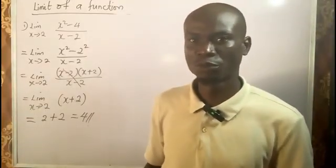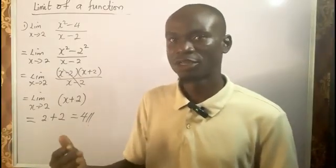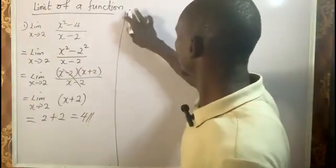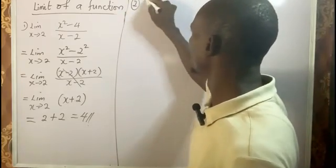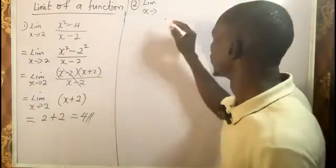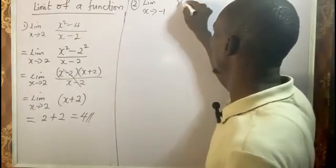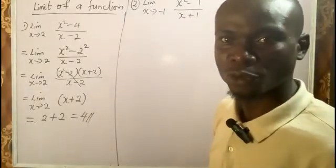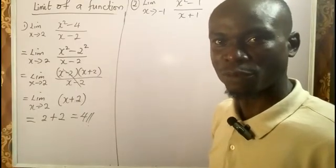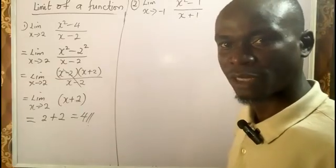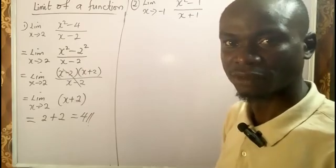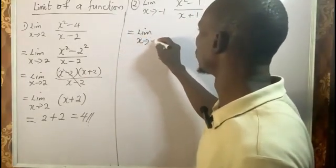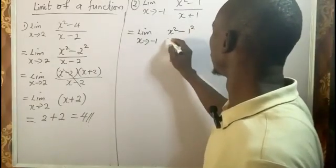For consistency, let's take a similar example so that whenever you see a situation like this you can directly relate. Let's look at another case involving the difference of two squares. Example two: limit as x tends to minus 1 of (x² minus 1) over (x plus 1). If I substitute minus 1 into the denominator, I get minus 1 plus 1 which is zero — undefined, so I have to break it down.